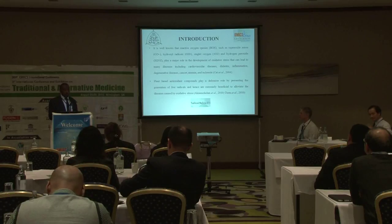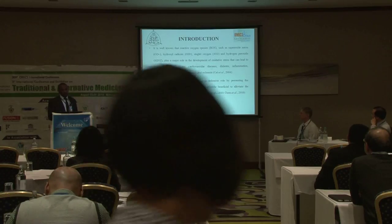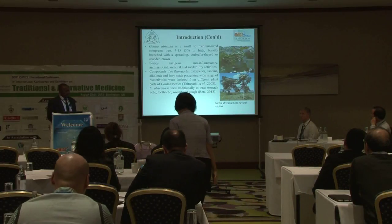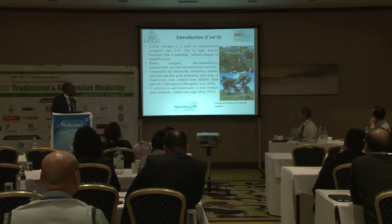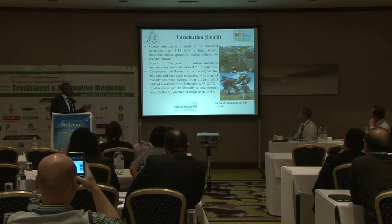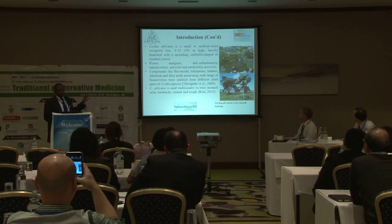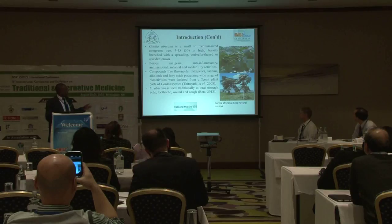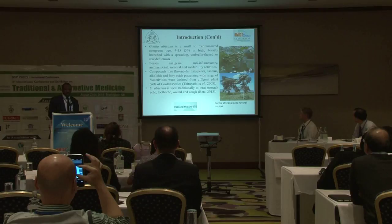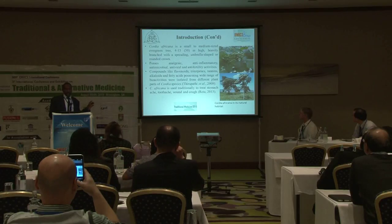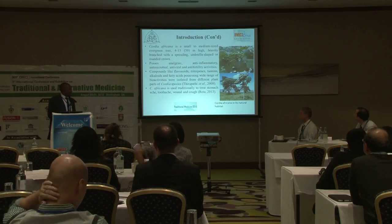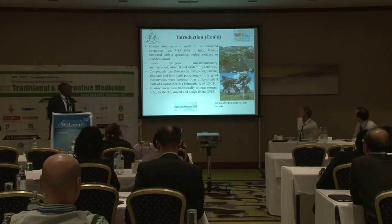These diseases include cardiovascular diseases, diabetes mellitus, degenerative diseases, and a host of other diseases. Chodia africana is a small to medium size green tree, heavily branched with a spreading umbrella shape. The plants of this species are known to possess analgesic, anti-inflammatory, antimicrobial, and antiviral activities. A lot of compounds have been isolated from this species, including flavonoids, triterpenes, tannins, alkaloids, and fatty acids.